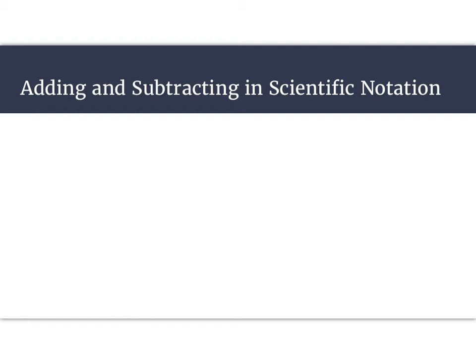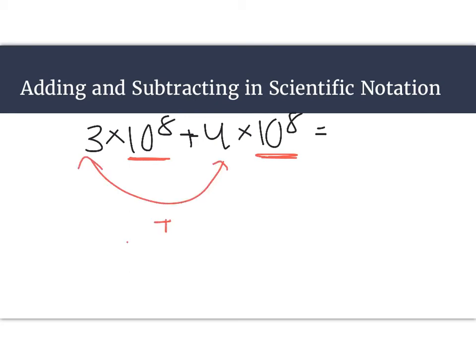So adding and subtracting in scientific notation is something that's really going to save us time overall. You can probably use your calculator and that's fine. However, it may be easier to just do it in your head to save a little bit of time. So this one, we have 3 times 10 to the 8th plus 4 times 10 to the 8th. Now I need to have the exact same exponent here. Then I can just add these two together. So I get 7 times 10 to the 8th.